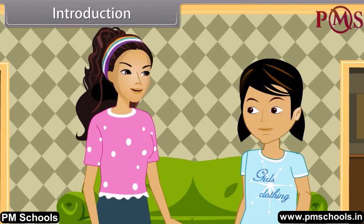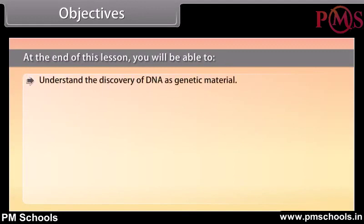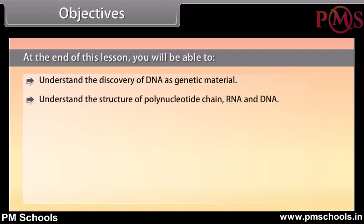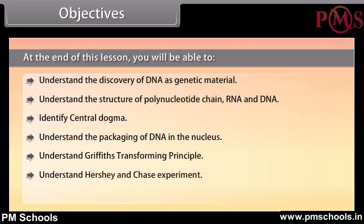Let me explain in detail. At the end of this lesson you will be able to: understand the discovery of DNA as genetic material; understand the structure of a polynucleotide chain, RNA and DNA; identify the central dogma; understand the packaging of DNA in the nucleus; understand Griffith's transforming principle; understand the Hershey and Chase experiment; and identify the differences between DNA and RNA.